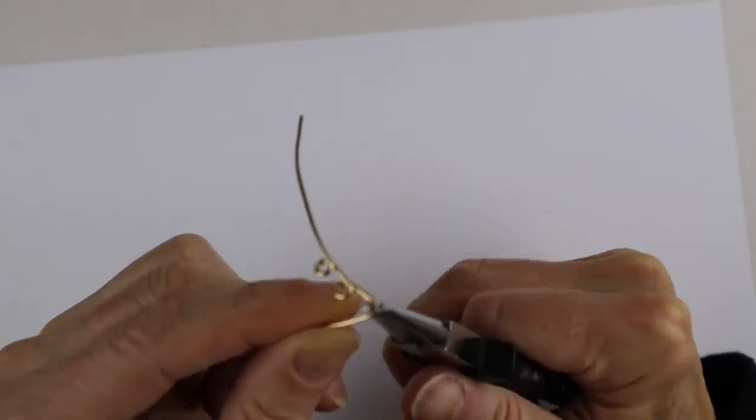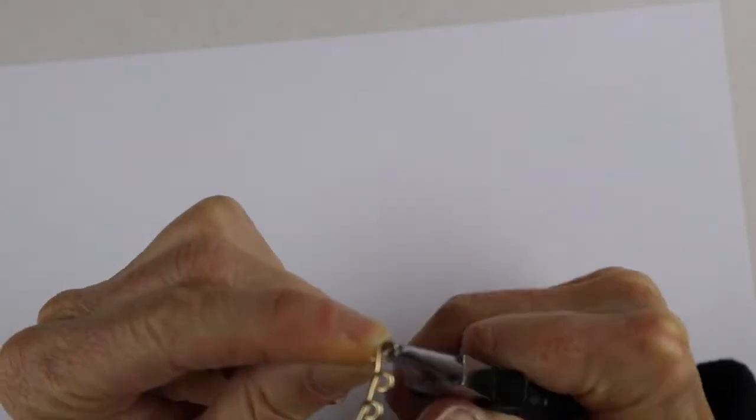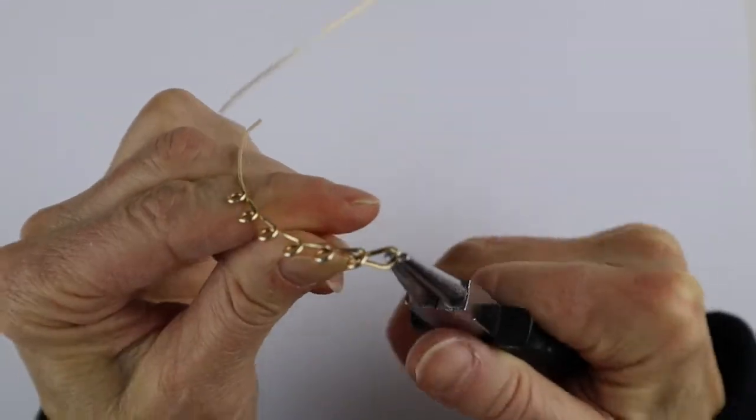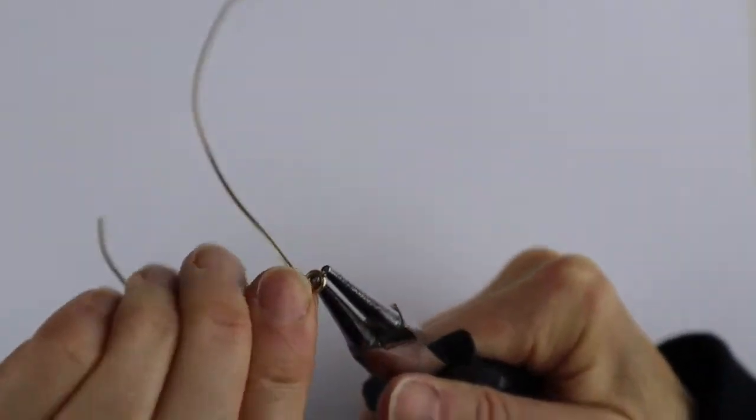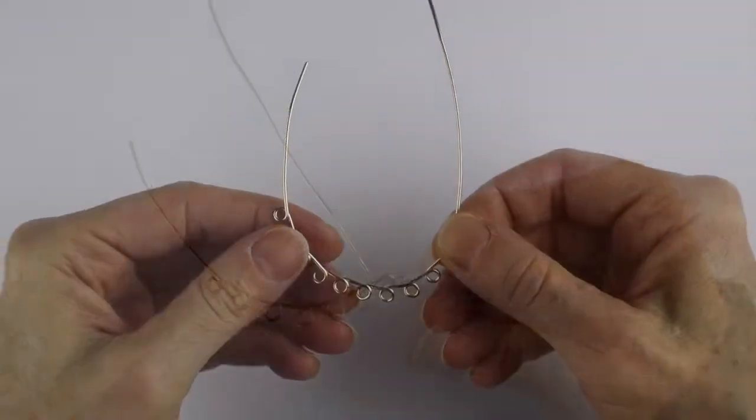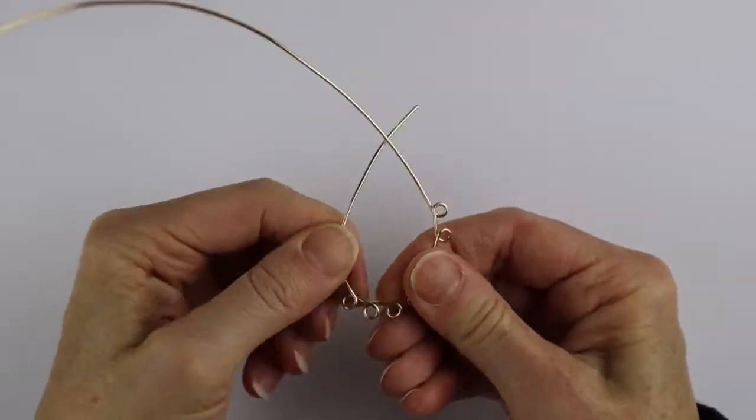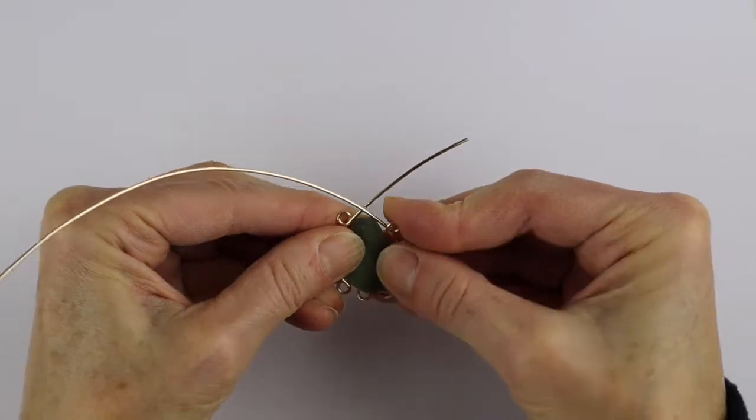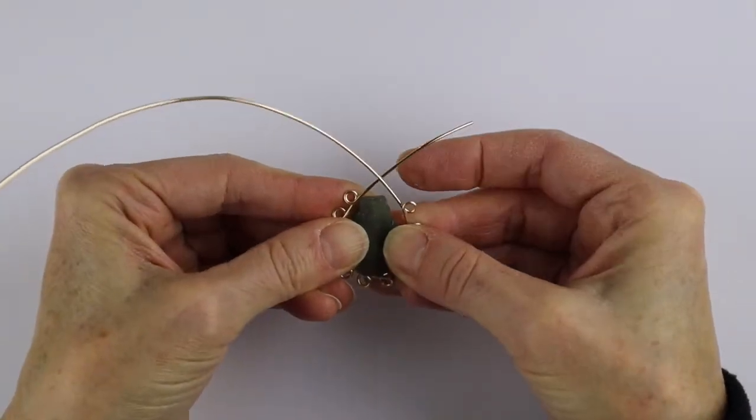So what you're going to do is just do a series of loops with the end of the round pliers, and how many you need is going to depend on how much you space them apart and on how big your glass is.